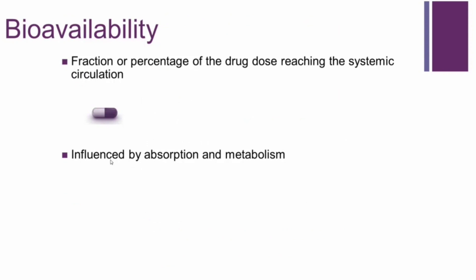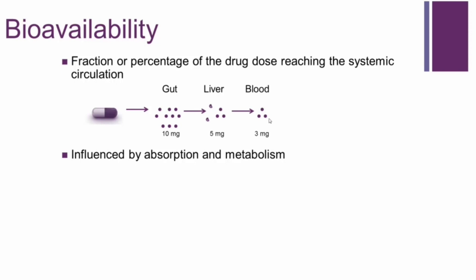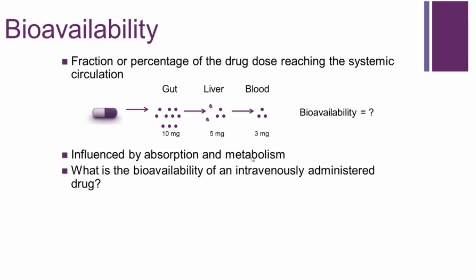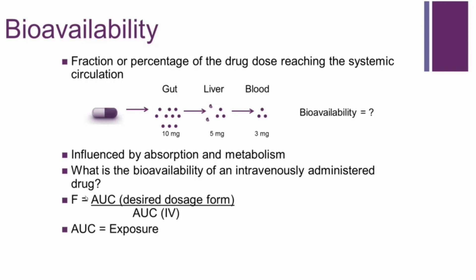Bioavailability is a very important pharmacokinetic term — it's the fraction or percentage of drug that reaches the systemic circulation, meaning the blood exposure. If you give a dose orally, it dissolves in the gut, is absorbed into the blood, and is metabolized by the liver through the first-pass effect. Ultimately what gets to the blood after the liver is what is bioavailable — for example, 30%. The fraction absorbed is calculated as F, which is the AUC of the desired dosage form (e.g., oral) over the AUC achieved with IV administration.